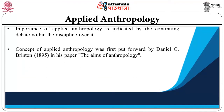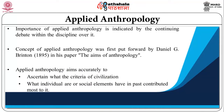The concept of Applied Anthropology was first put forward by Daniel G. Brenton in 1895 in his paper, The Aims of Anthropology. According to him, Applied Anthropology aims to accurately ascertain what the criteria of civilization are, what individual or social elements have in the past contributed most to it, how these can be continued and strengthened, and what new forces, if any, may be called into play to hasten the progress.